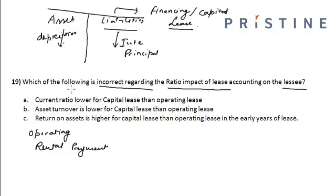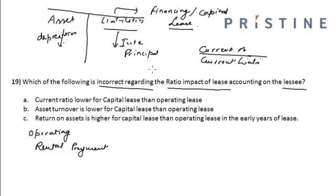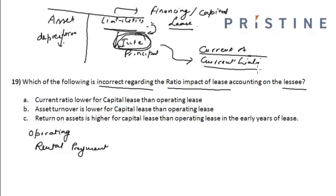Let us look at the current ratio. The current ratio is lower for the capital lease than operating lease. The current ratio is equal to current assets divided by current liabilities. Now the liabilities — the carrying value of the lease is treated as a debt. The interest part of that debt will increase current liabilities, but current assets will remain the same. Hence the current ratio is lower for capital lease than operating lease.